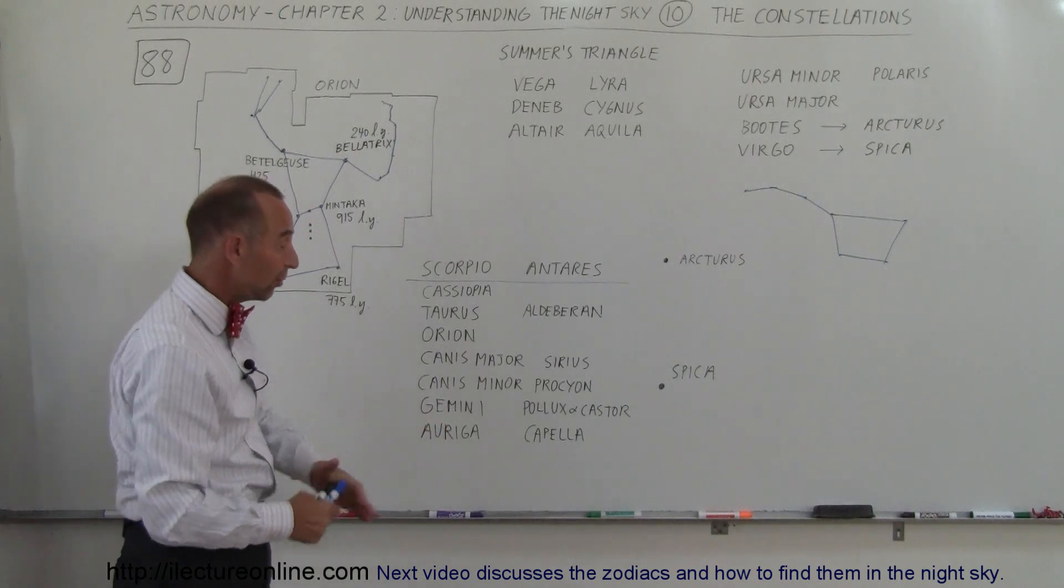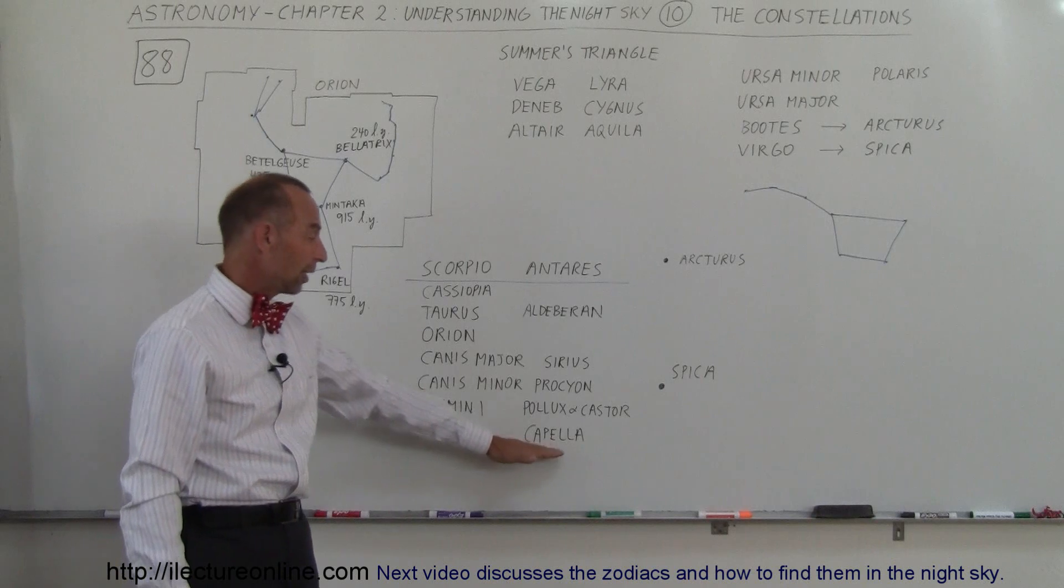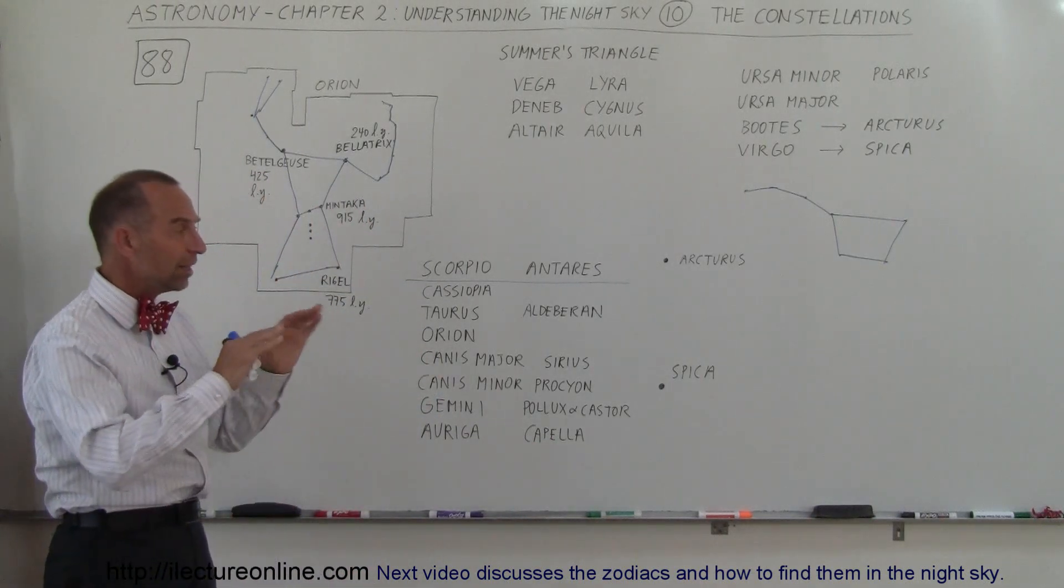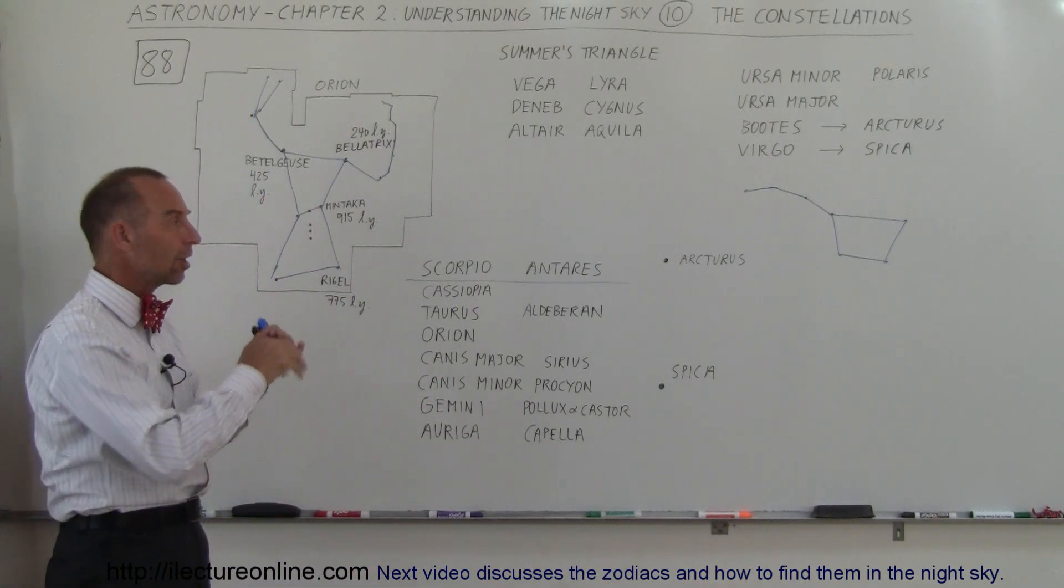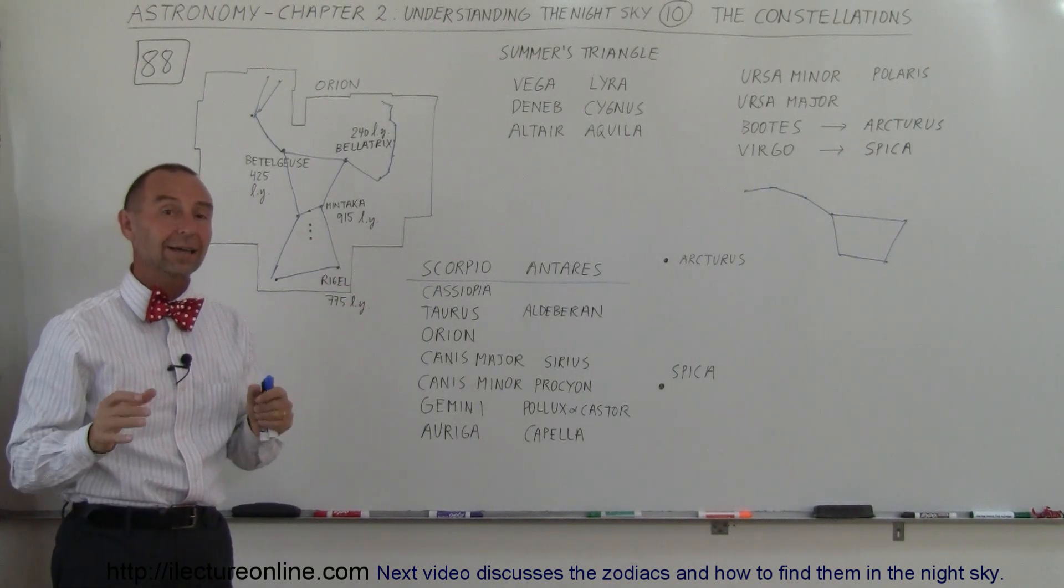Gemini, the twins, with the two bright stars, Pollux and Castor. And Auriga, with the bright star Capella, a little bit further to the north. And so you can see that as you begin to recognize constellations in the sky, slowly you're able to map out the sky.